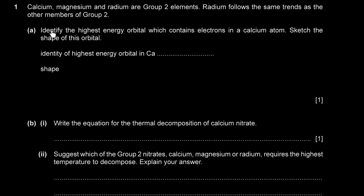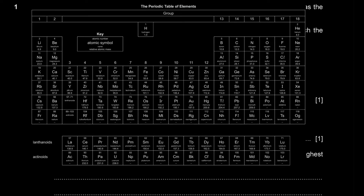Part A asks us to identify the highest energy orbital containing electrons in a calcium atom and sketch its shape. Looking at the periodic table, calcium is in Group 2, Period 4, so the electronic configuration ends with 4s2.